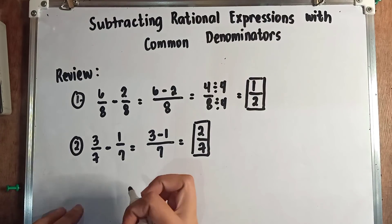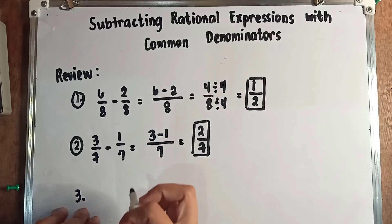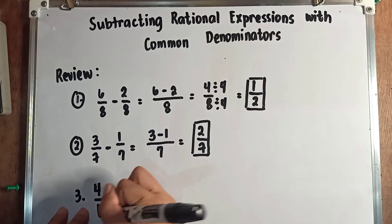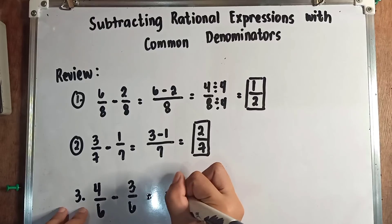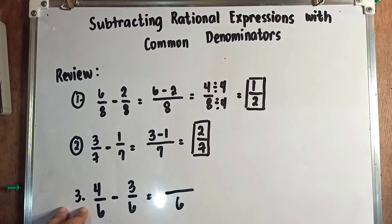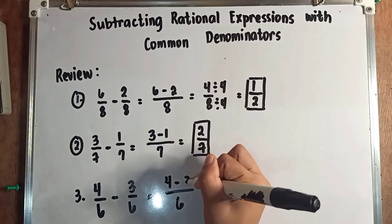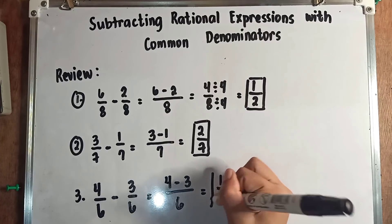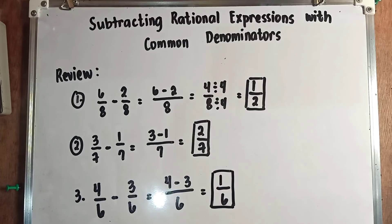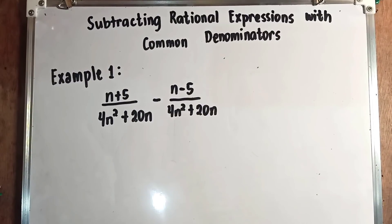Let's have the last example: 4 over 6 minus 3 over 6. We will only copy the denominator 6 and subtract 4 minus 3, giving us 1 over 6. So 1 over 6 is our final answer when we subtract 4 over 6 and 3 over 6. We are now done reviewing how to subtract fractions with common denominators.